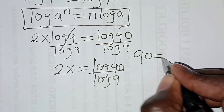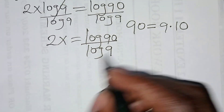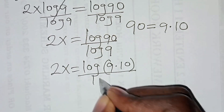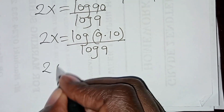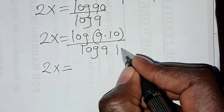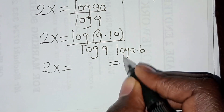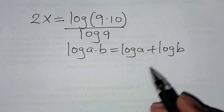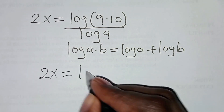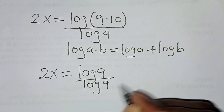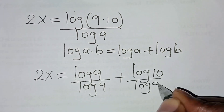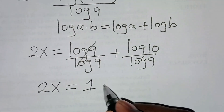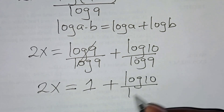So we can express 90 as 9 multiplied by 10. Now substituting this, we'll have 2x is equal to log(9 × 10) divided by log 9. We can then apply the product rule: log(9 × 10) = log 9 + log 10, so 2x is equal to log 9 divided by log 9 plus log 10 divided by log 9, which simplifies to 1 plus log 10 divided by log 9.